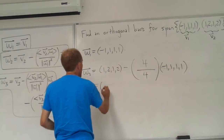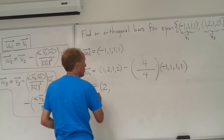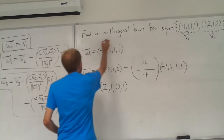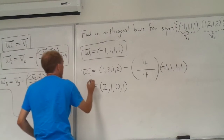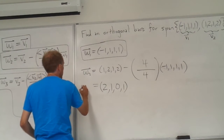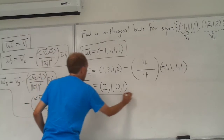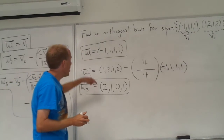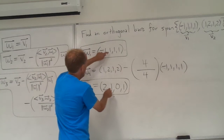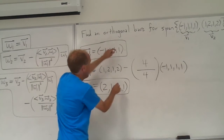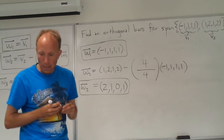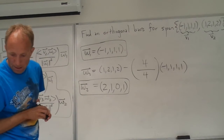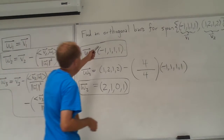4 over 4 is just 1, so we literally just have to subtract, and we get (2, 1, 0, 1). So this is w1 and this is w2, and we should be able to check that these are orthogonal to each other — if we do the dot product of w1 and w2 we should get 0. So there is an orthogonal basis.